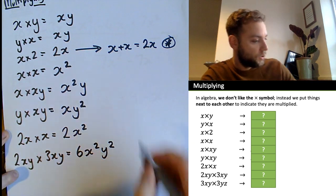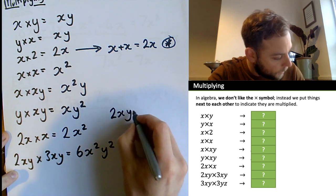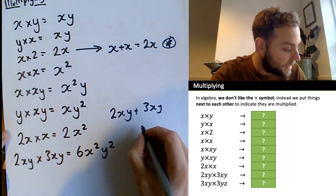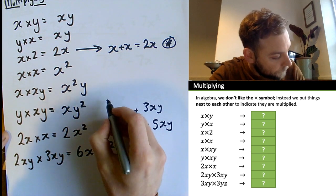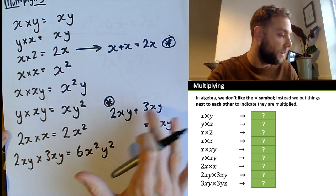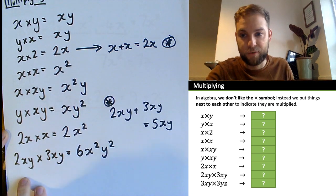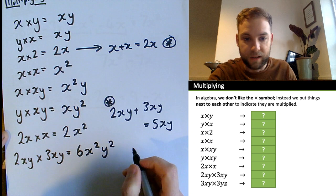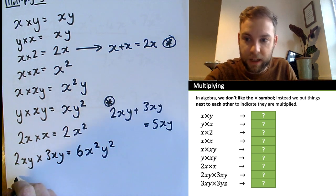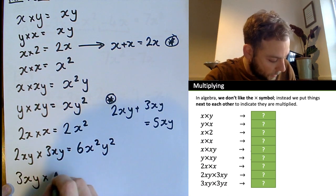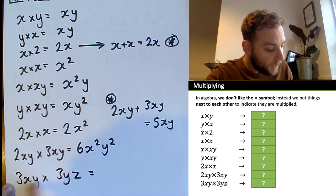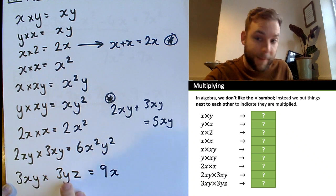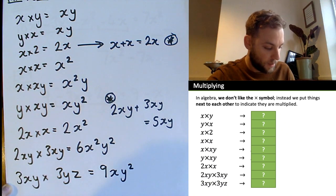Be careful: if you had 2xy plus 3xy, you think of those as names — 2 of something plus 3 of something equals 5xy. But 2xy times 3xy is completely different — you must multiply the letters: x times x is x squared, y times y is y squared. That's where people get confused. Last example: 3xy times 3yz — 3 times 3 is 9, just one x, y times y is y squared, then times z gives z. Answer: 9xy squared z.